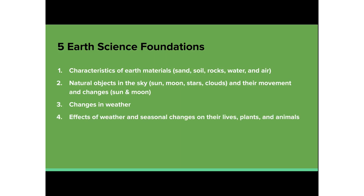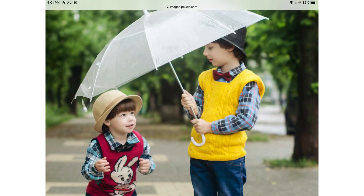The fourth foundation is to understand how the effects of weather and seasonal changes can have on their own lives and the plants and animals and the environment around them. For example, if it's raining outside, the child will learn that they may need to wear a raincoat, or boots, or carry an umbrella. Or maybe if it's really sunny outside, they can also use the umbrella to protect them and shield them from the sun.